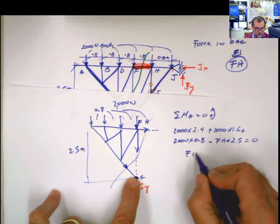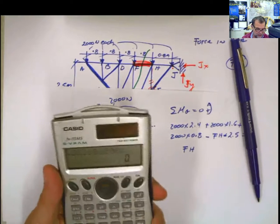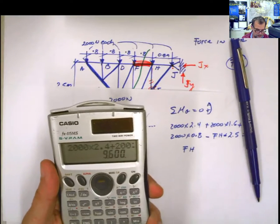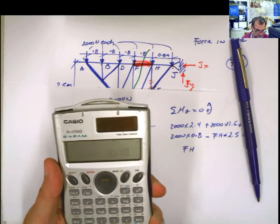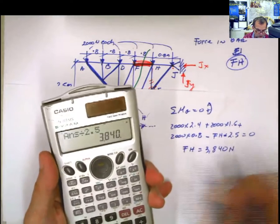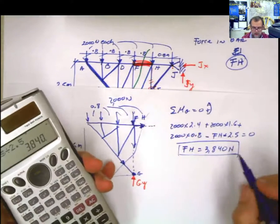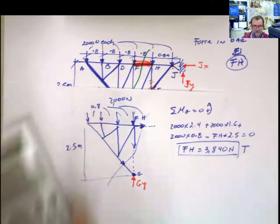When you solve for FH, where is my calculator? Calculator is here. 2,000 times 2.4 plus 2,000 times 1.6 plus 2,000 times 0.8 equals 9,600 divided by 2.5 equals 3,840 newton. And because I assumed this force originally leaving out of the joint, that means that that force is going to be in tension. There you go.